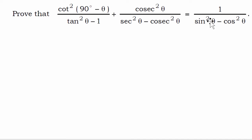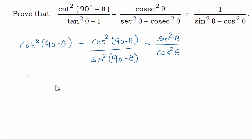We have to take one term at a time. The left hand side has one term. Let us take the first term. Within the first term, let us look at the numerator. This is cot square of 90 minus theta. Cot square 90 minus theta — let us simplify that.